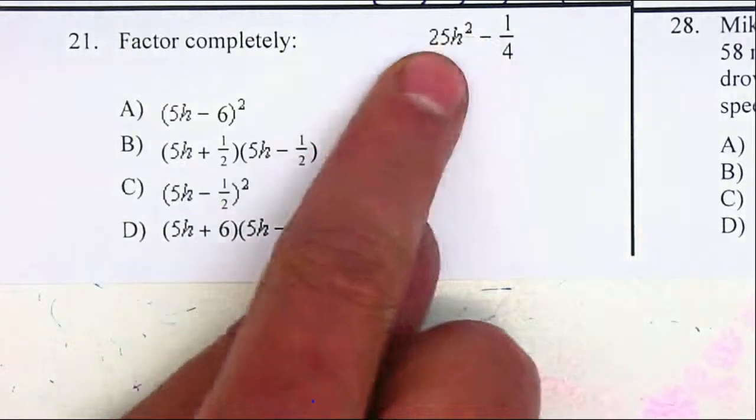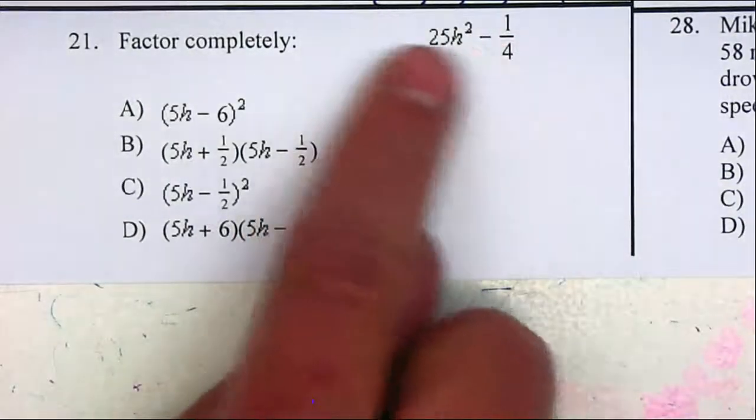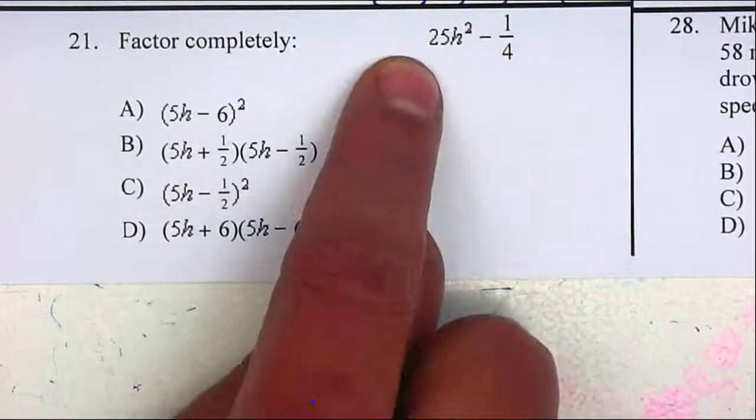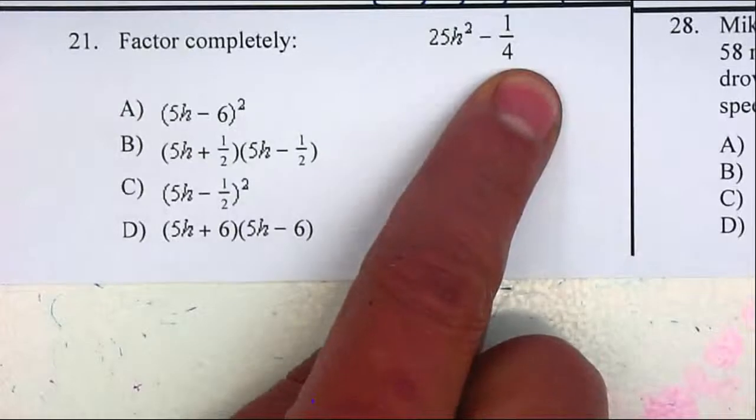First you need to take out the common factor. But in this case there is no common factor between 25 and 1/4. I can't factor out an H. The second term does not have an H.